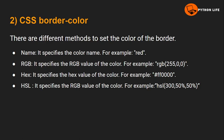For border color, we can specify the color using different formats. We can use a color name, for example red. We can also use RGB — with a range of 0 to 255 for each of the three parameters, for example rgb(255, 0, 0). Another option is hexadecimal, where we specify the hex value of the color.